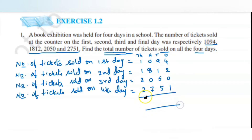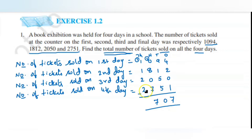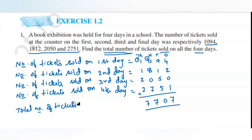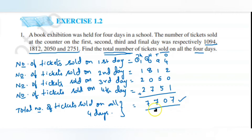Now let us add all four numbers: 4 plus 2 is 6, 6 plus 1 is 7, 9 plus 1 is 10 — write 0, carry 1. Next: 2 plus 8 is 10, plus 7 is 17, plus 5 is 22 — write 2 carry 2. Then continuing: the total comes to 7707. So the total number of tickets sold on all four days is seven thousand seven hundred and seven.